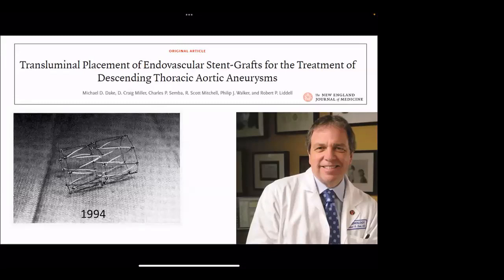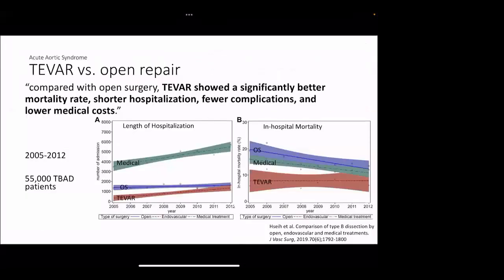A parallel development to hemiarch is TVAR — endovascular repair of acute pathologies in the descending thoracic aorta. Dr. Dake, a physician I trained with at Stanford, was the first to describe this in the thoracic aorta in the early 1990s. When you go through their paper, it's a crude design that has evolved a long way. The original devices were handmade and custom-made for each patient — they even took dacron from the surgeons, cut it, hand-ironed it to get the crimps out, and hand-sewed it onto the device.